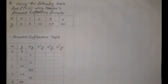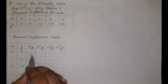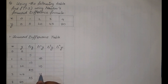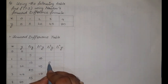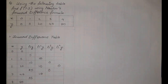For the second forward difference, we take differences of the first forward difference column: 15−5=10, 25−15=10, and 35−25=10. For the third forward difference: 10−10=0, and 10−10=0. For the fourth forward difference: 0−0=0. The forward difference table tapers down to a single point, which is always the case.